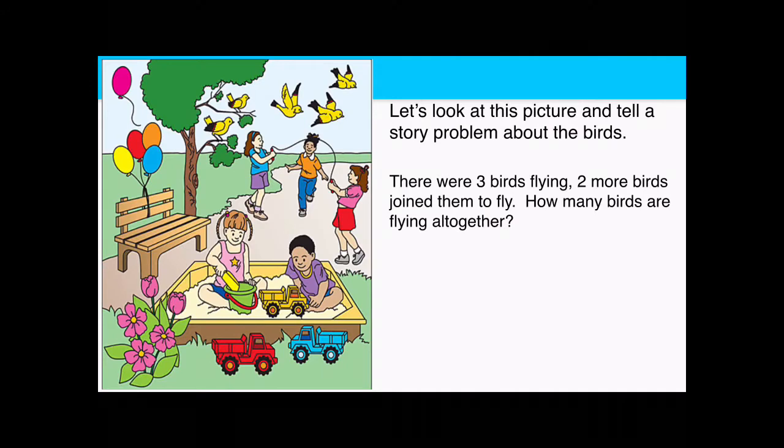Let's look at this picture and tell a story about the birds together, friends. There were three birds flying. Two more birds joined them to fly. How many birds are flying all together? So first what I want you to do is look back at the problem. It says three birds flying, which means we'll need three counters to start. Please place three counters down in front of you right now.